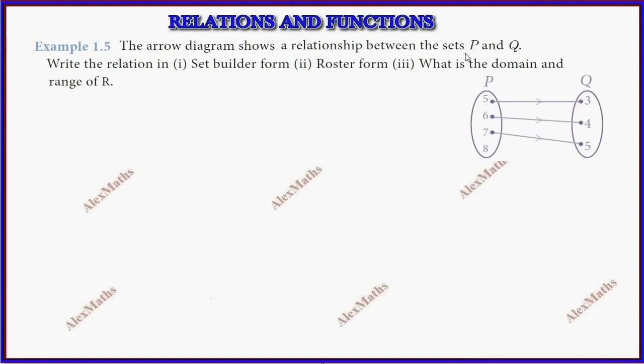The arrow diagram shows a relationship between the sets in set builder form. Looking at the elements: 5 maps to 3, 6 maps to 4, and 7 maps to 5.